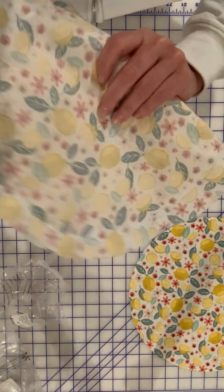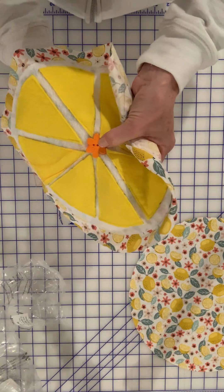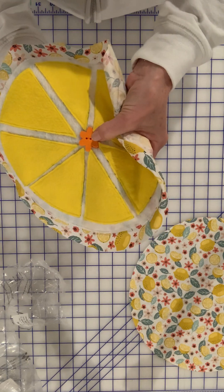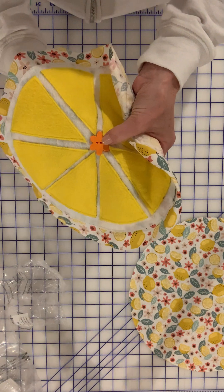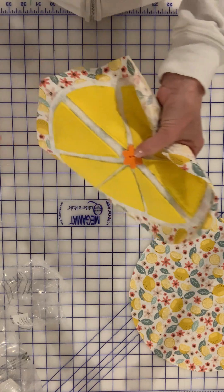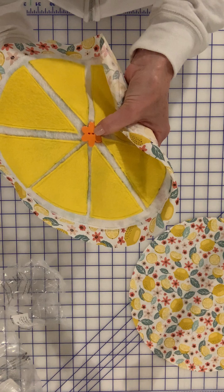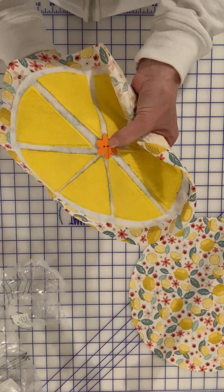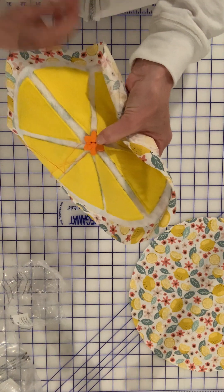Sometimes you gotta poke around to find it. There we go. Then I pulled it right back out. There we go. So this is three loops. I want to do five.